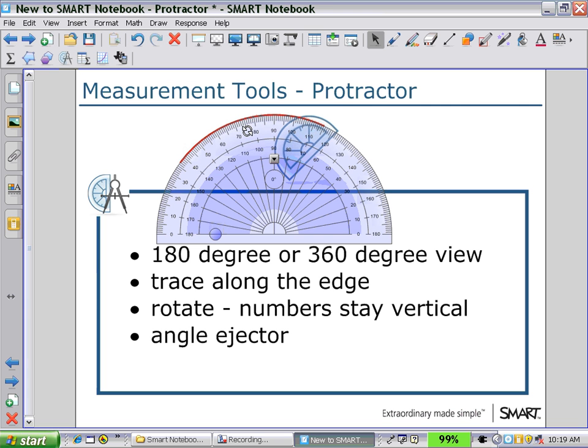Clicking on the dark shaded region, we have up here an angle ejector arrow, little green arrow, as well as a green circle. And as we hold that green circle and rotate around, we see our angle measure displayed in the center circle change. And then as we click on the green arrow, we eject out that angle that's been measured.